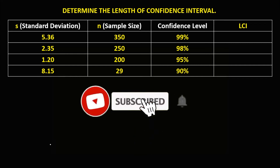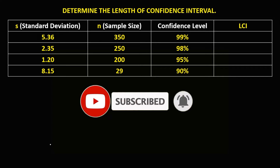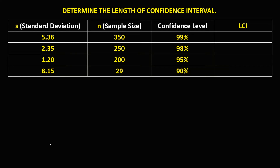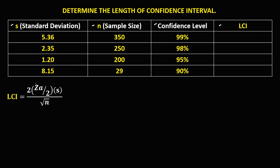Welcome to MathStorya. Let's have this problem: determine the length of a confidence interval using the given data — the standard deviation, the sample size, and the confidence level. To find the length of the confidence interval, we use this formula: 2 times the confidence coefficient times the standard deviation, all over the square root of the sample size.